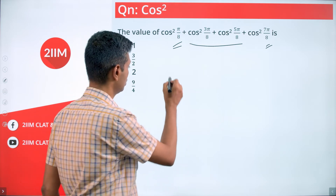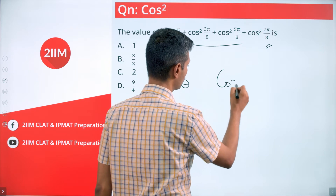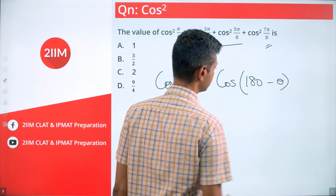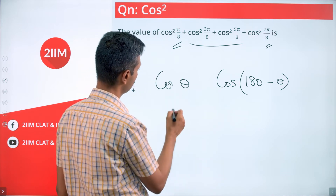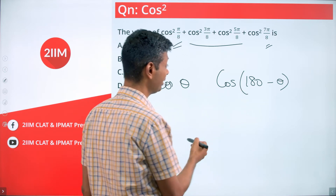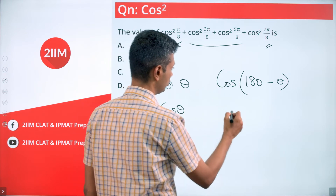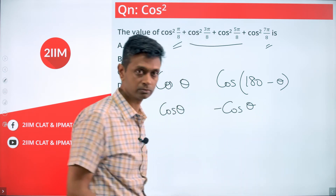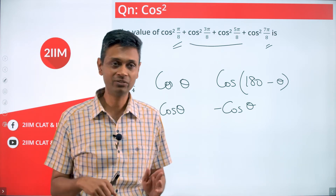Think about cos(θ) and cos(180° − θ). Since 180° − θ is in the second quadrant, cos(180° − θ) = −cos(θ). So cos²(180° − θ) = cos²(θ).